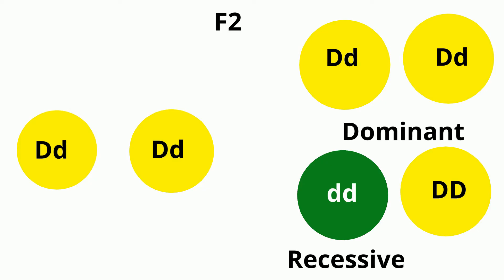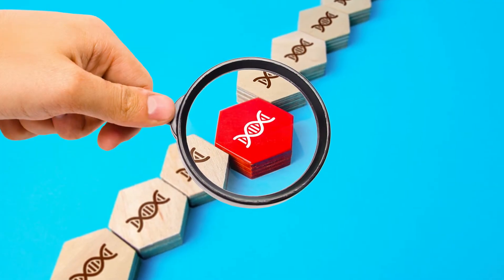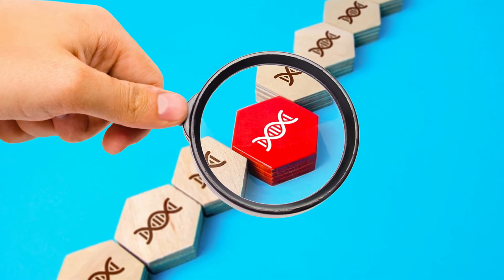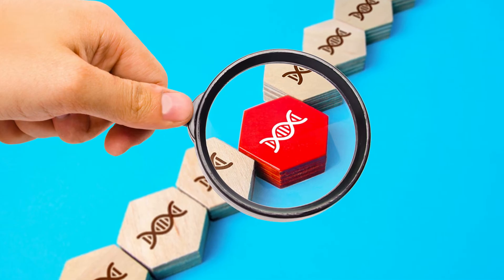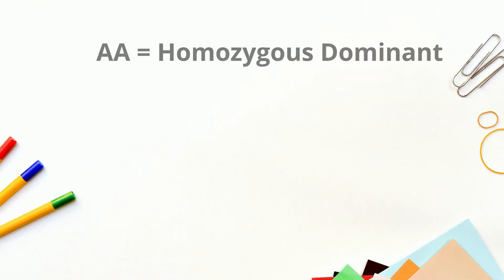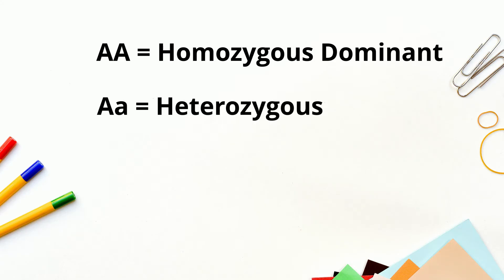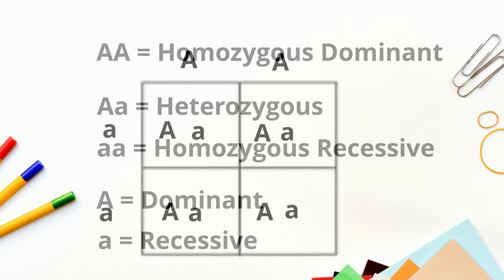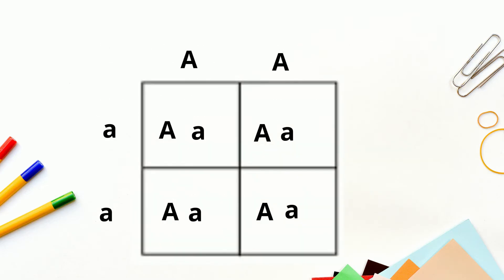Mendel then theorized that genes can be made up of three possible pairings of heredity units. He called these factors, and we now call them genotype. They are homozygous dominant, heterozygous, and homozygous recessive. The big A represents the dominant factor, and the little a represents the recessive factor. In Mendel's crosses, the starting plants were homozygous dominant and homozygous recessive.